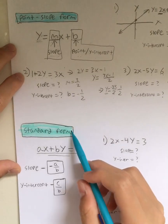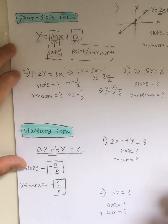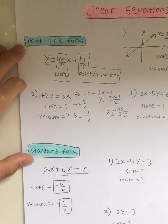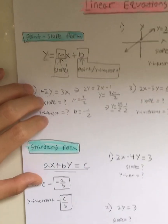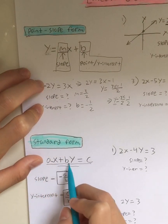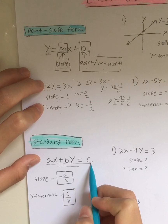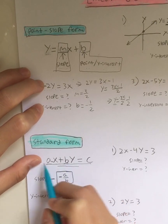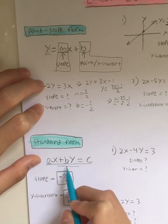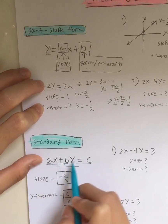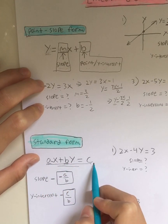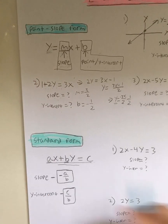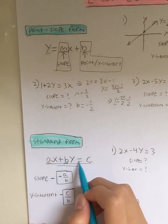Now let's do standard form. In my opinion, you guys will see point-slope form much more than standard form. But what is standard form? It is ax plus by is equal to c. A, b, and c are constants — meaning they are just numbers — while x and y are always going to be the variables in this equation.